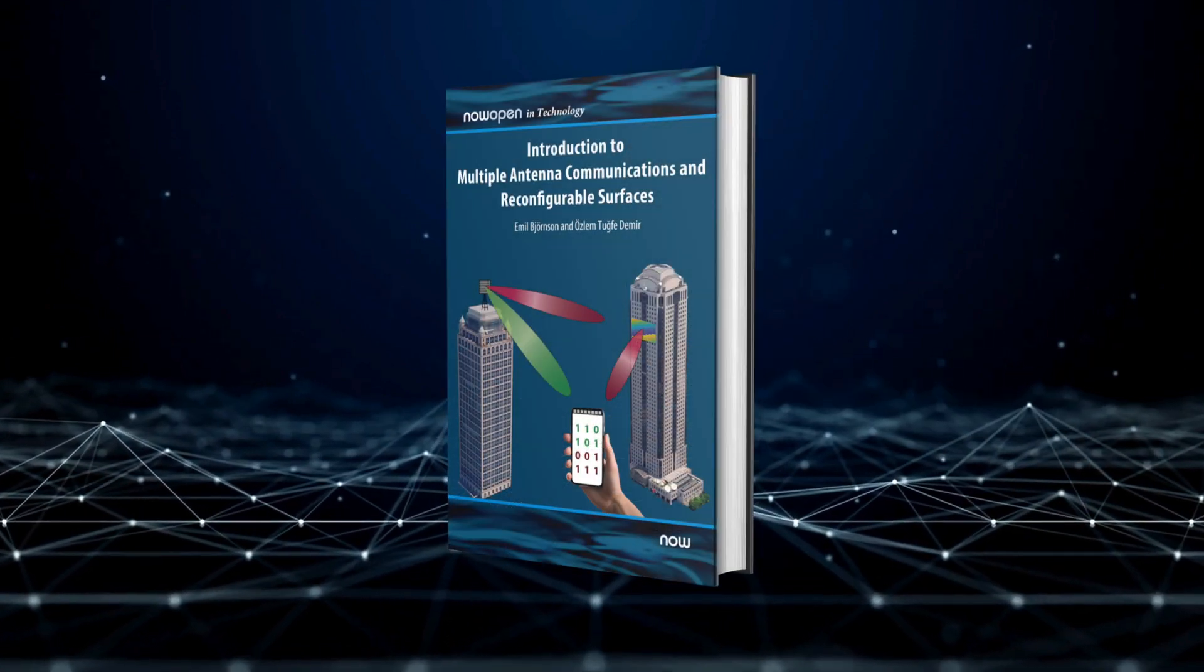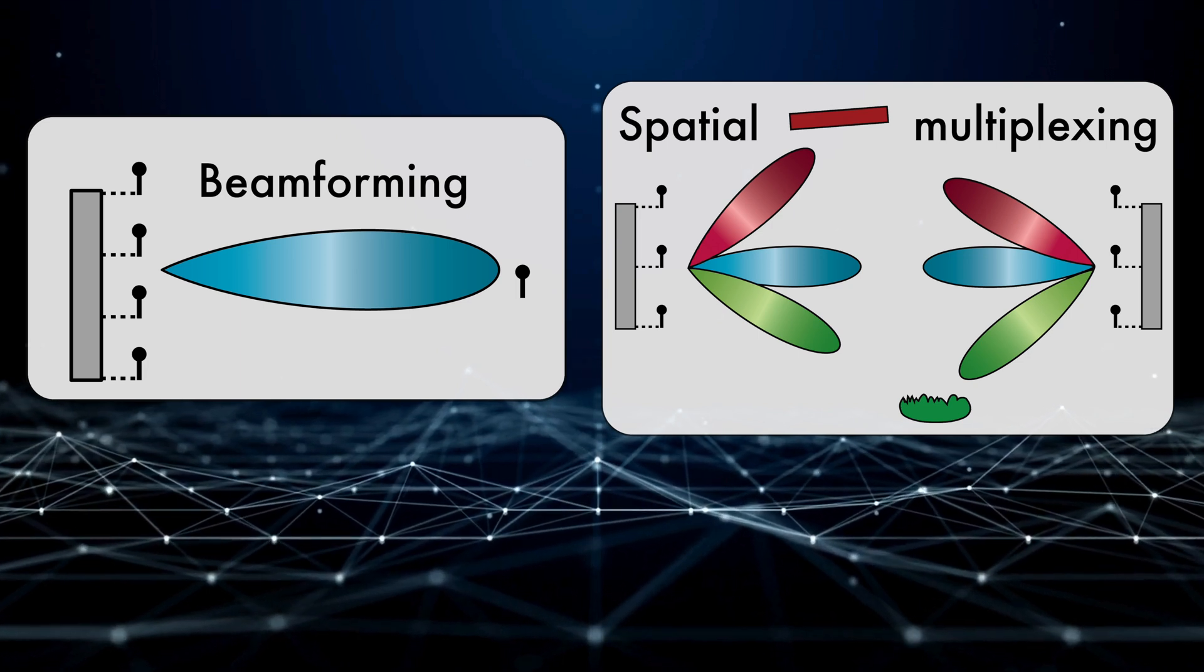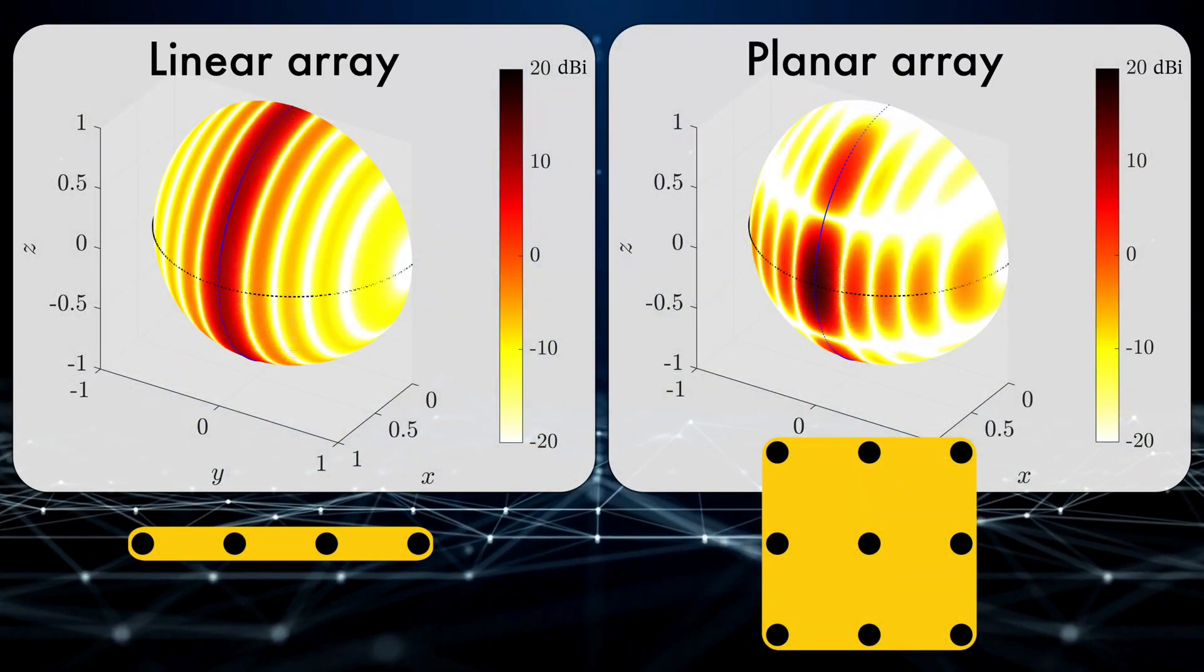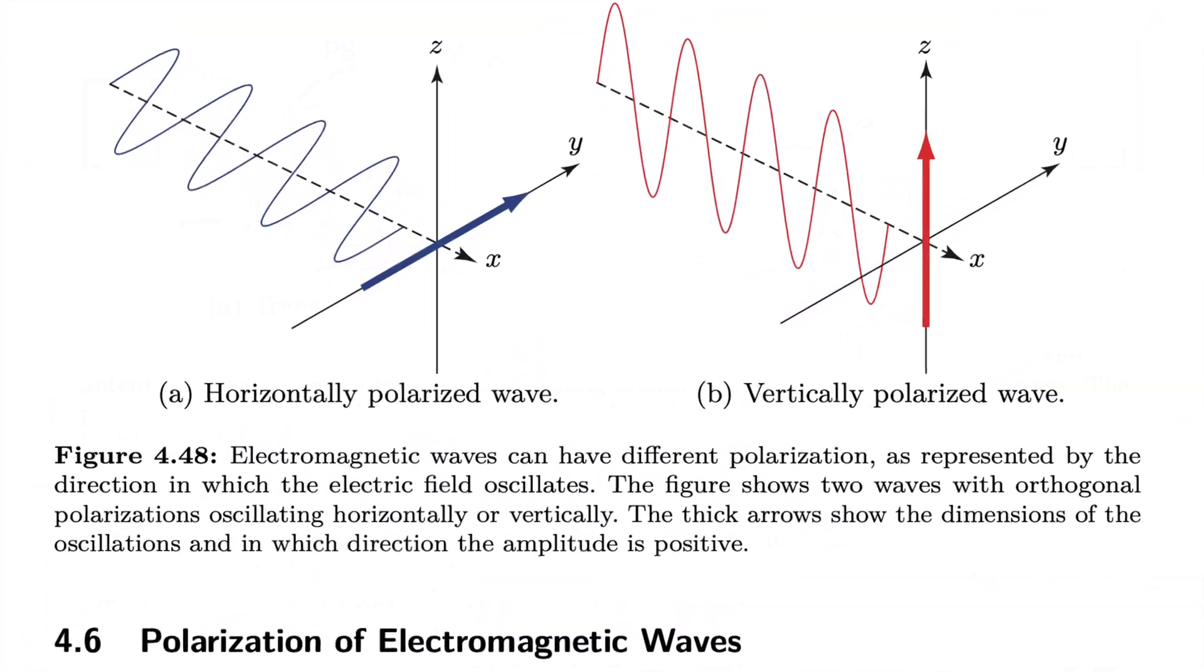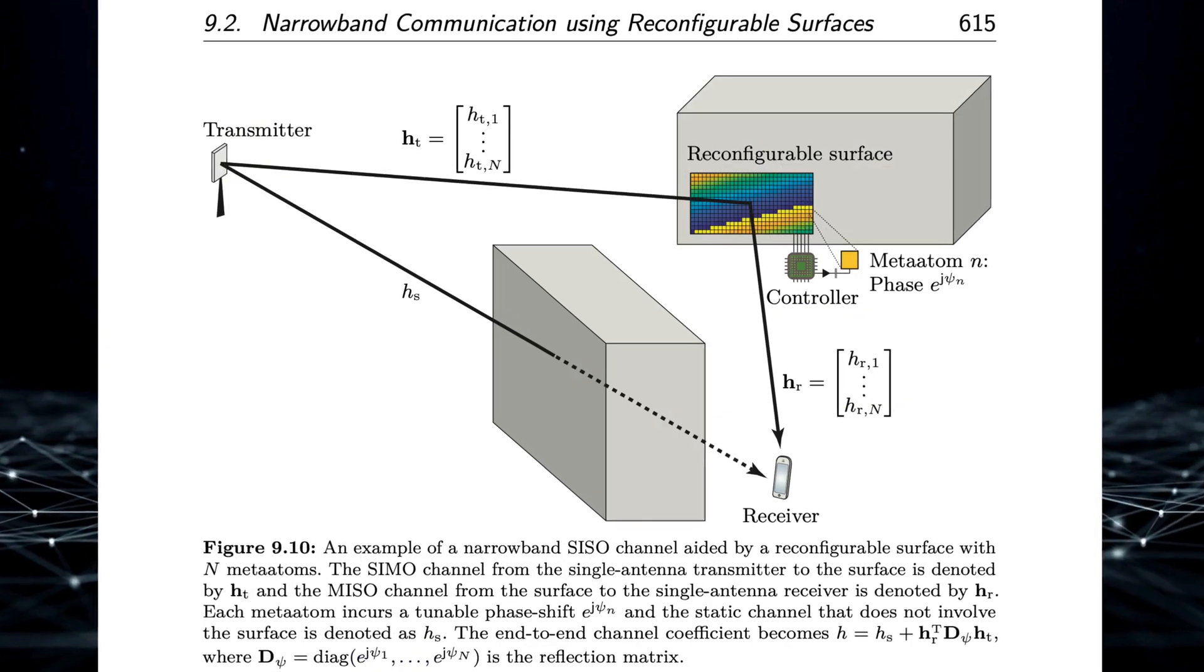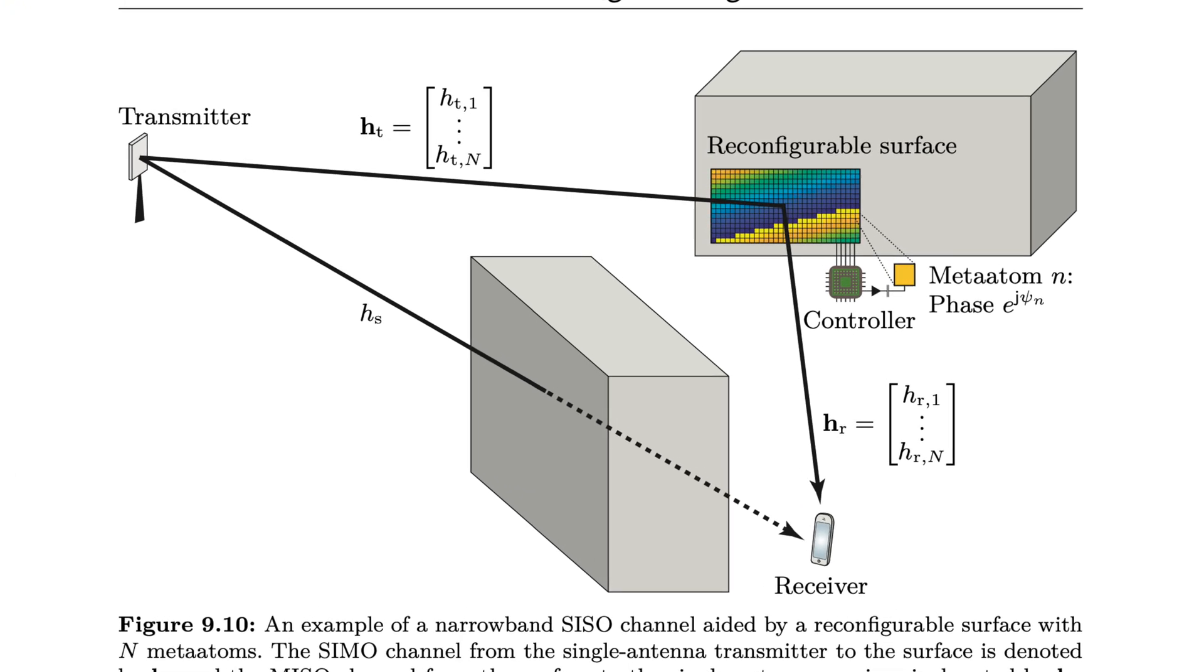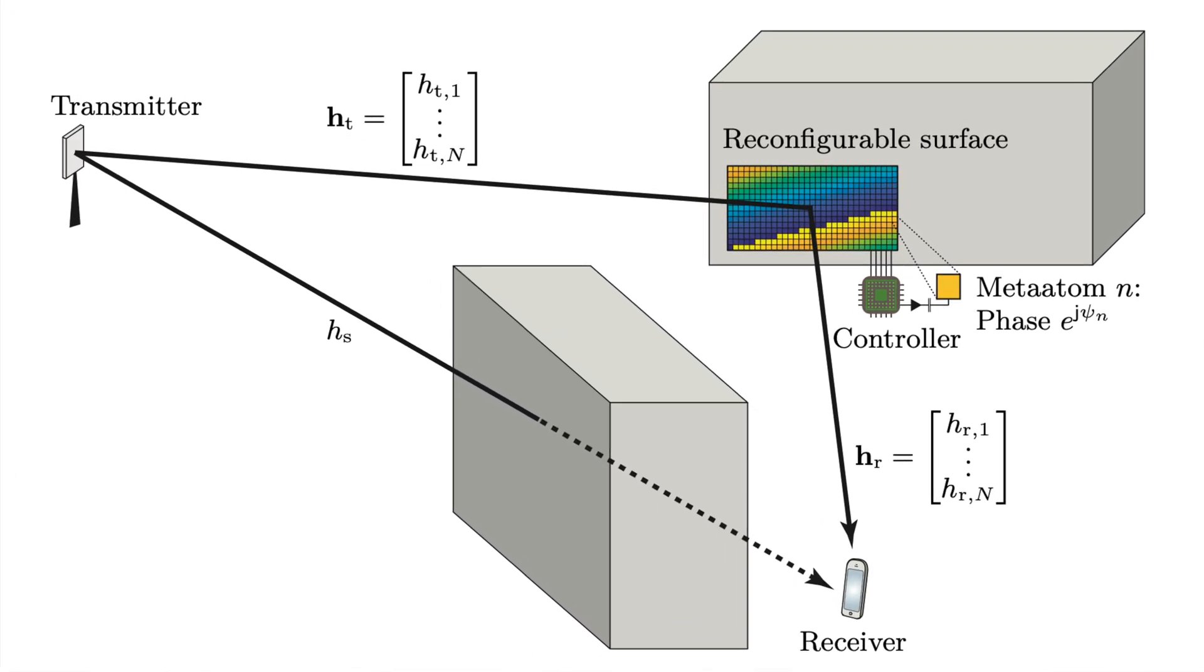We introduce and analyze basic functionalities such as beamforming, spatial multiplexing, and diversity, but also consider commonly overlooked aspects such as the shape of the beams that we can generate, its relation to the array geometry, the polarization of radio waves and hybrid analog and digital architectures. And we also provide the fundamentals of reconfigurable intelligent surfaces that control the wireless signals that are reflected by these surfaces and can be analyzed with similar tools as in multiple antenna communications.